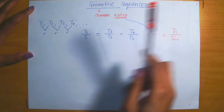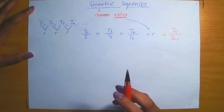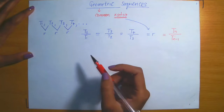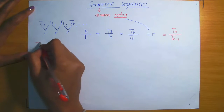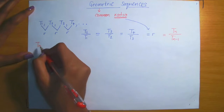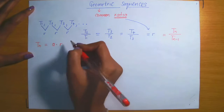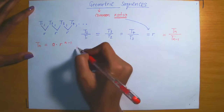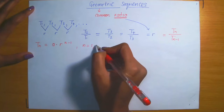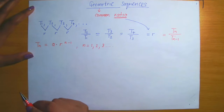Let's suppose that you were working with a geometric sequence and you needed to determine, for example, the 17th term in the sequence. In that case, we have a general formula to determine the nth term tn. For a geometric sequence, tn is equal to a times r raised to the power n minus 1, where n equals 1, 2, 3, and so on — meaning all natural numbers starting from 1.